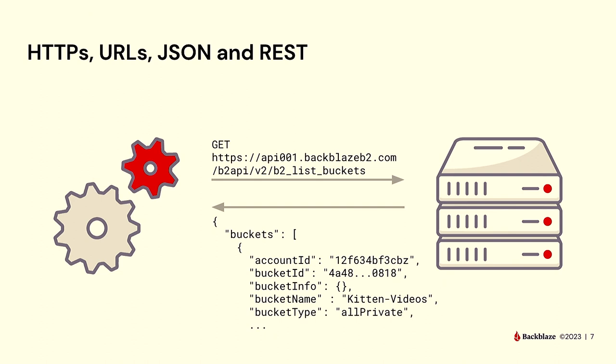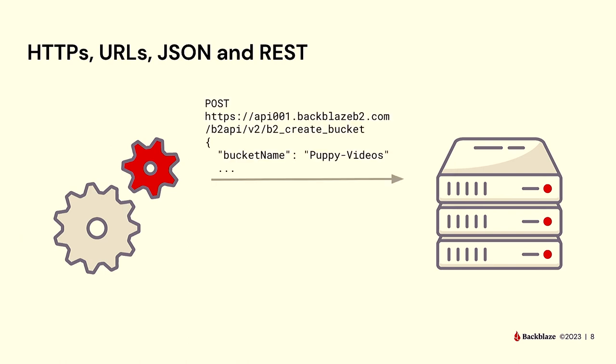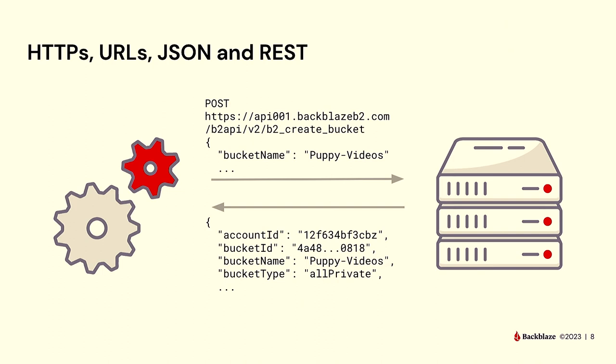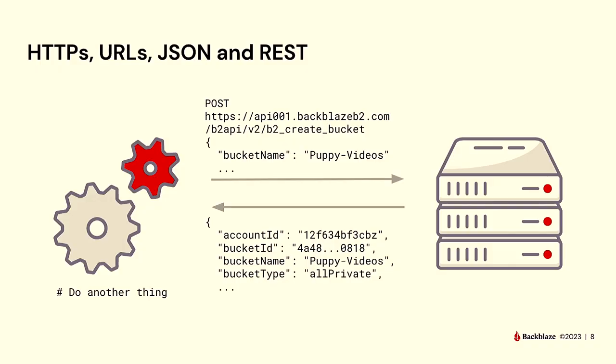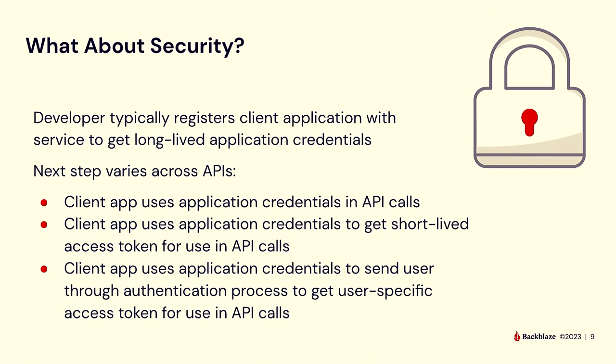Similarly, after getting its list of buckets, the app might want to create a new bucket. Just like hitting the red button on a form in the browser, the application does a POST to another URL — create bucket — with the name of the bucket. That's the equivalent of what you type in the form. It gets back some more JSON with the bucket name, ID, and all the details of the bucket that was just created. When you write an app or integration using these web-based APIs, it's really just like your browser interacting with web servers.